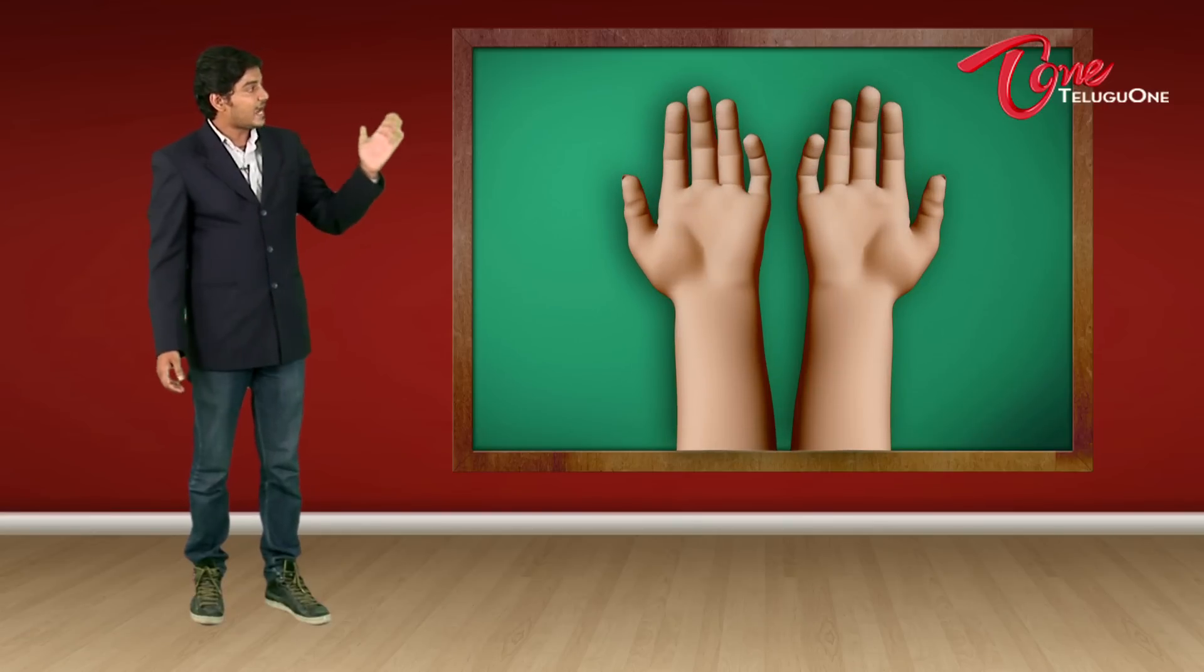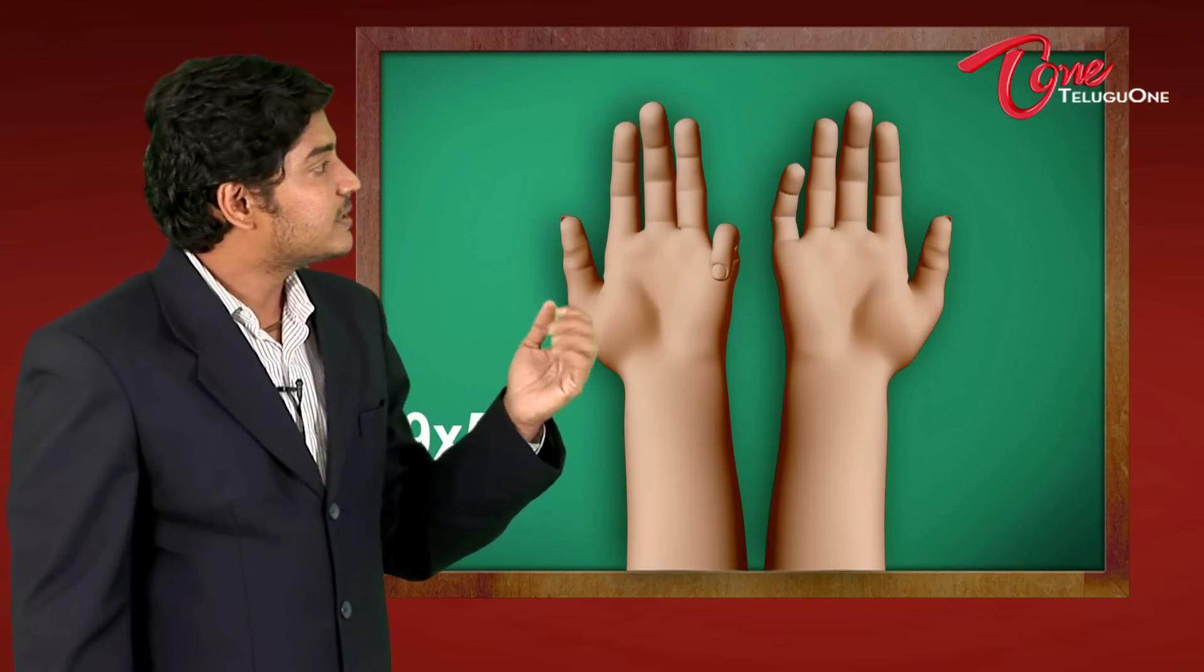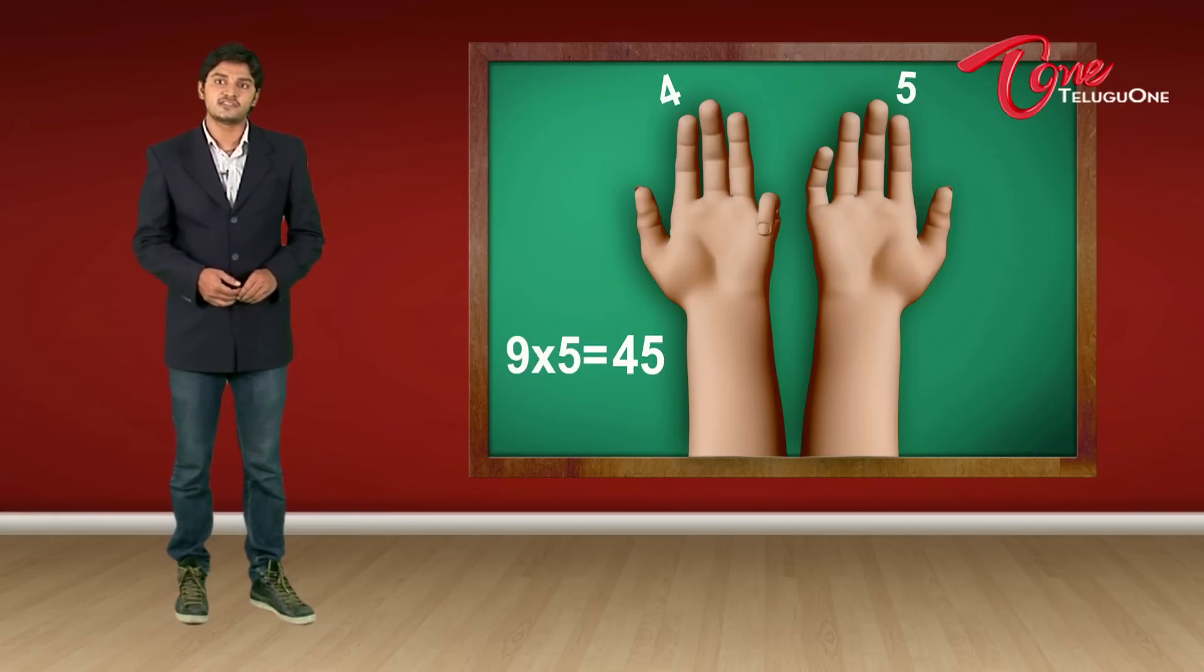So you have my hands on the board and the numbers written on my fingers. So suppose I want 9 times 5. So I have my 5th finger. I'm going to close my 5th finger. That is my little finger on my left hand. So how many fingers are there before 5? 1, 2, 3 and 4. And then on the other hand, I have 5. So the answer is 45. So 9 times 5 is 45.